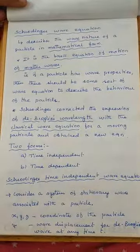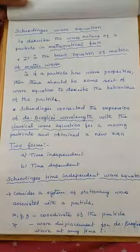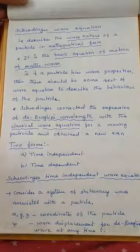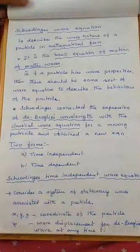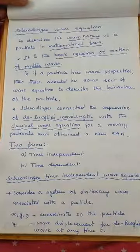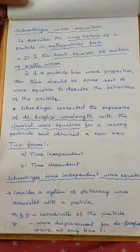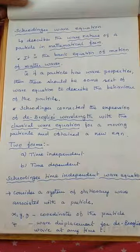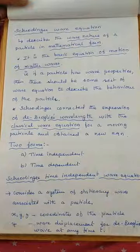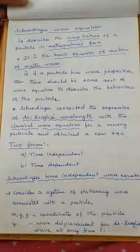Good morning. In the earlier lecture, we were seeing de Broglie's wavelength and its different forms. Now, in this lecture, we are going to derive an expression for Schrödinger's wave equation.